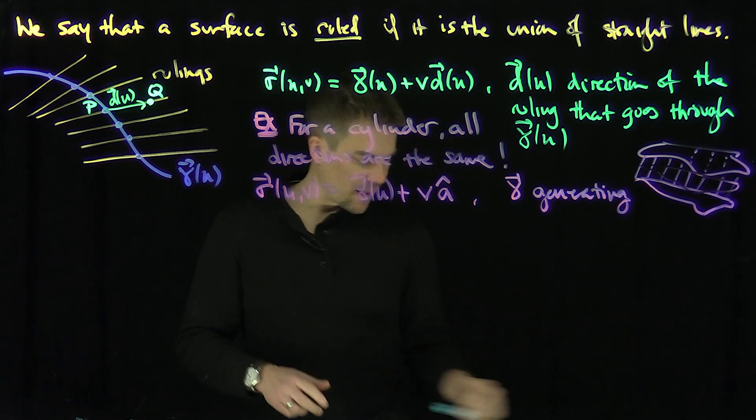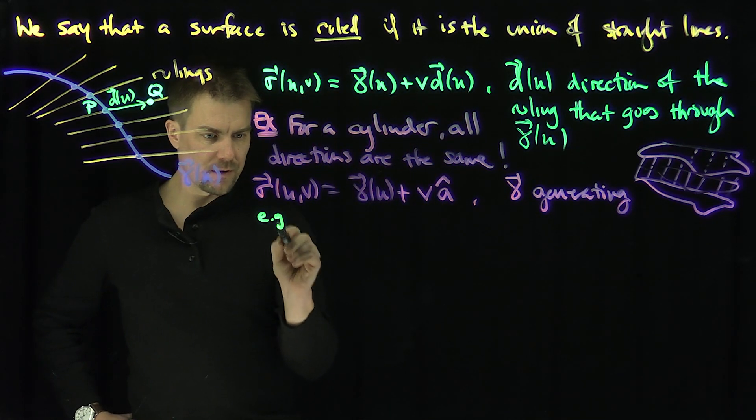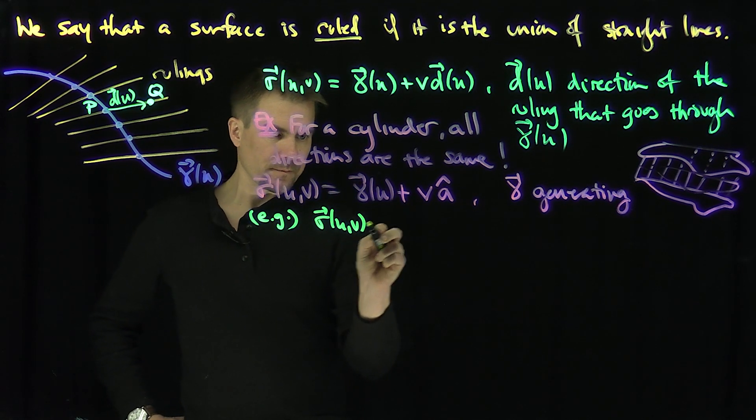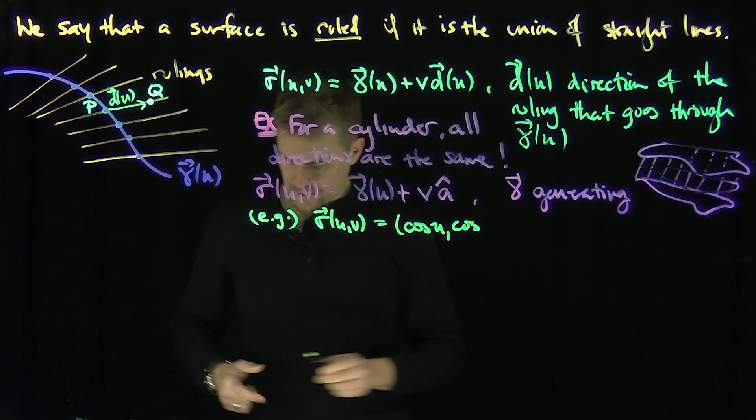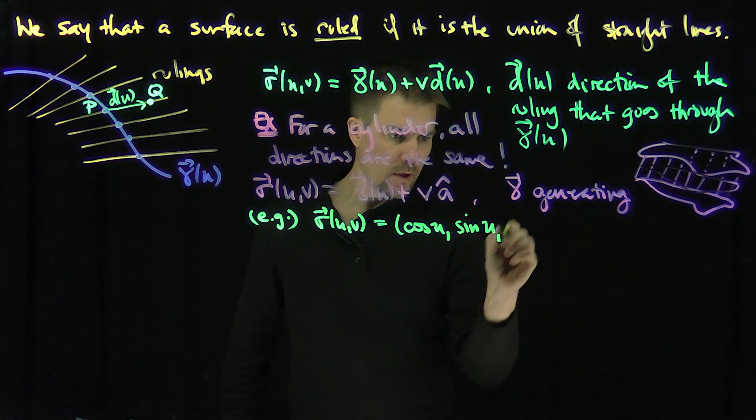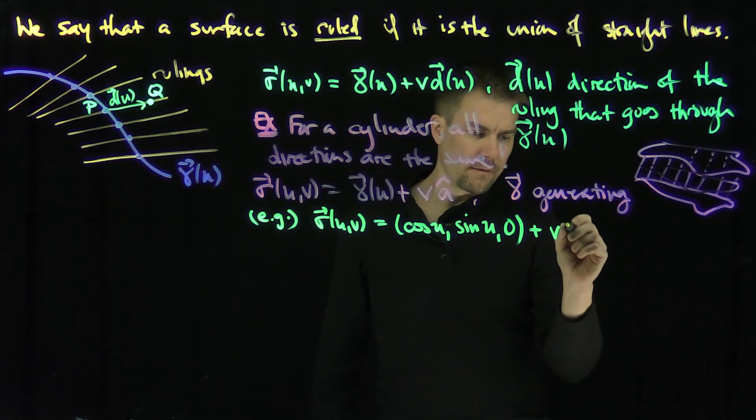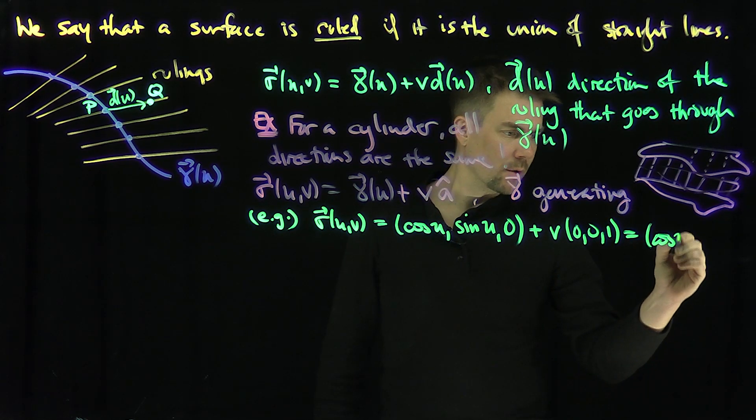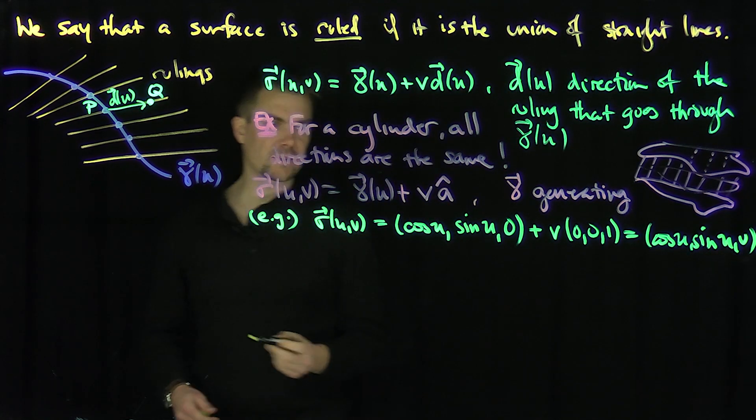And so what's our classic example of this? Our classic example is when the gamma is a circle. So in our typical example, an example of this surface would be, if I look at sigma of u and v, which is going to be cosine u, then sine u, zero, that's the unit circle in the xy plane. And I just add on v of zero, zero, one. That gives us our standard parameterization. Cosine of u, then sine of u, then v. That gives us our standard cylinder.